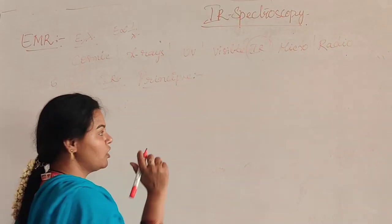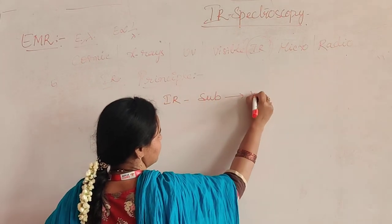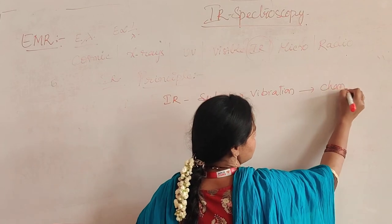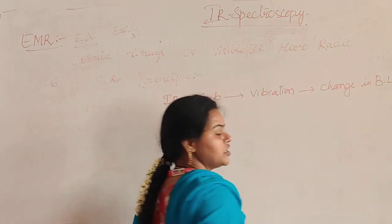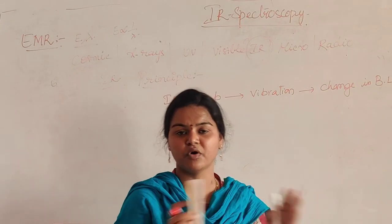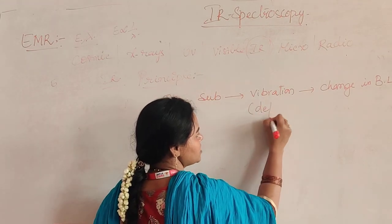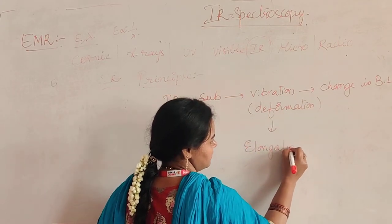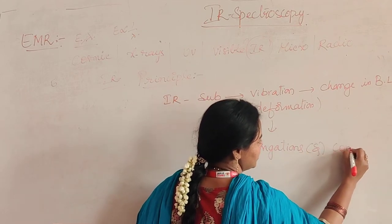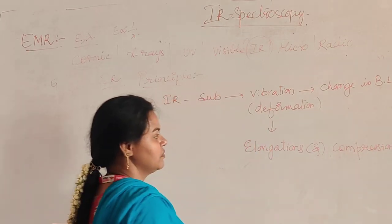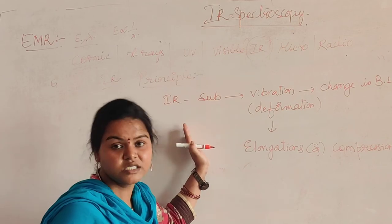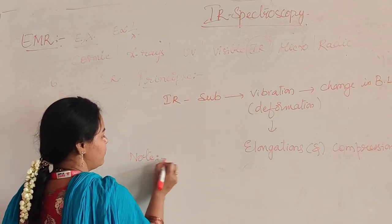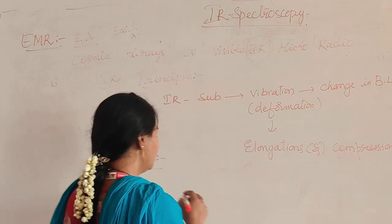Coming to the main principle of IR spectroscopy — when IR radiation falls on a substance, the substance undergoes vibration. This is its principle. What is known as vibration? Where there is a change in bond, it is named as vibration. Suppose a substance is taking continual change in its bond — like deformations — it undergoes deformation vibration. Deformation means elongations as well as compressions. These two together make up vibration, and this is the main principle of IR spectroscopy.